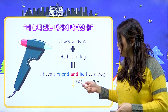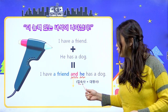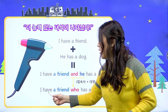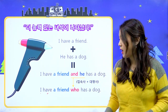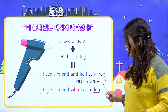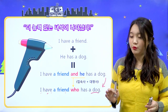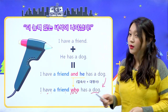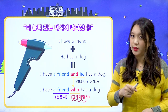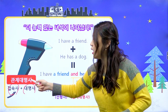우리가 지금까지 배웠던 접속사는 문장과 문장을 연결해주고 그 이음새가 보이는 접속사였다면, 오늘 배울 접속사는 더 능력이 있는 이유가 이게 원래 한 문장이었는지 아니면 붙여진 건지 그 이음새가 별로 티나지 않기 때문에 더 능력이 있는 글루라고 선생님이 이야기를 한 거예요. 어떻게 된 건지 한번 볼까요? 접속사와 대명사를 합해서 하나의 단어로 만들 거예요. 'I have a friend who has a dog.' 나는 친구가 한 명 있는데 그 친구는 강아지를 한 마리 가지고 있는 친구야. 더 짧아지고 더 심플해졌죠.